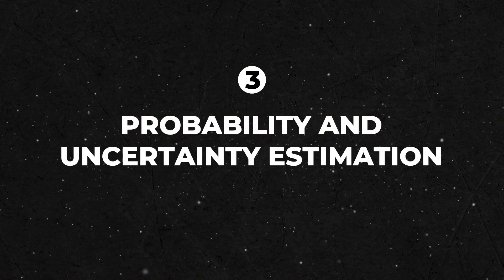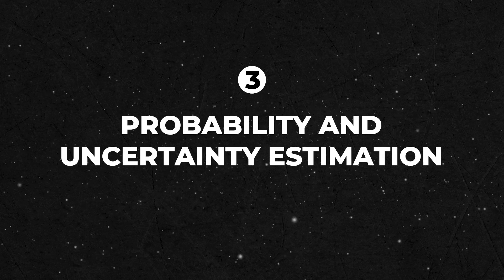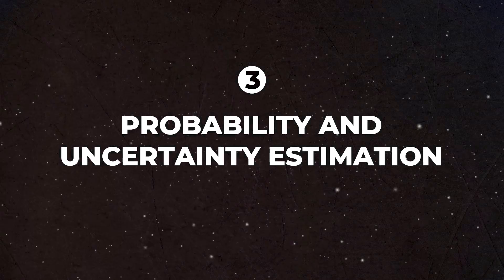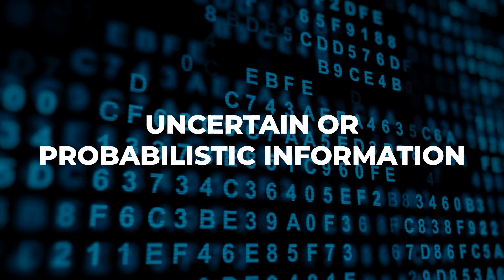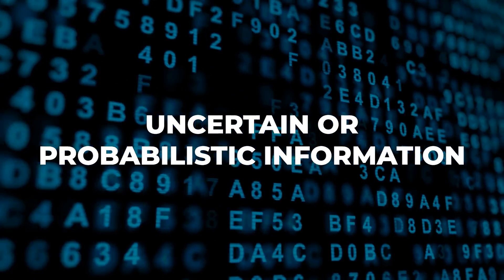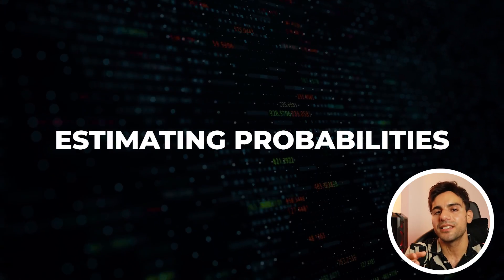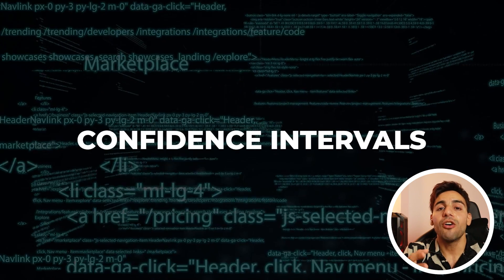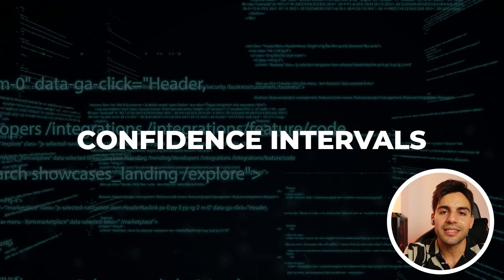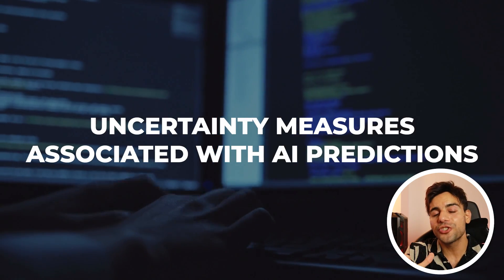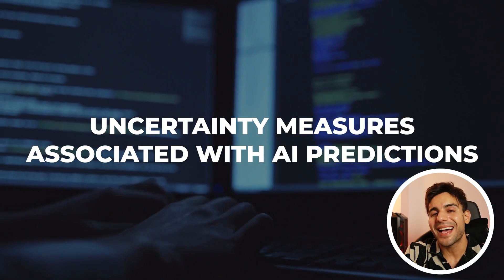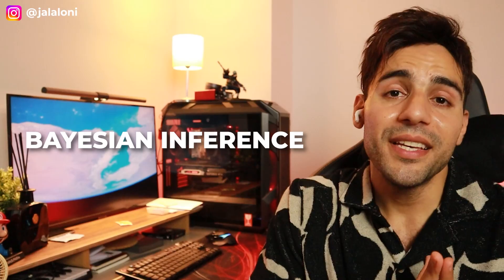3. Probability and Uncertainty Estimation. AI models often deal with uncertain or probabilistic information. Statistical methods play a crucial role in estimating probabilities, confidence intervals, and uncertainty measures associated with AI predictions.